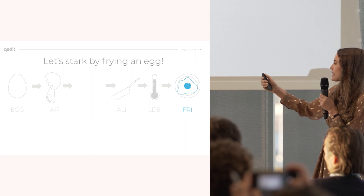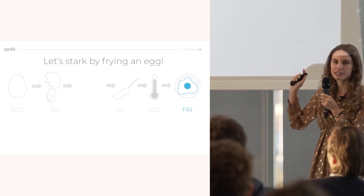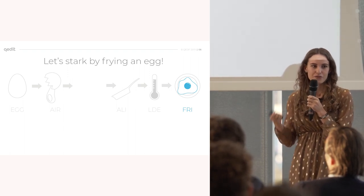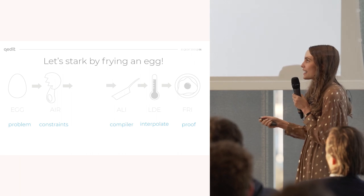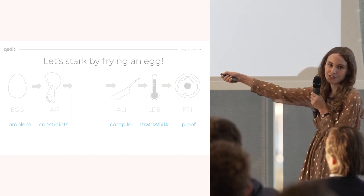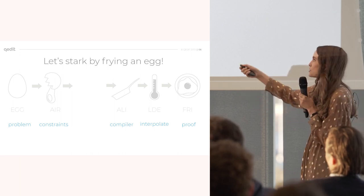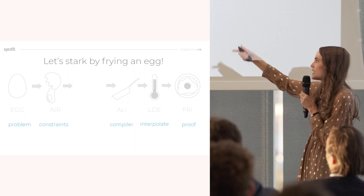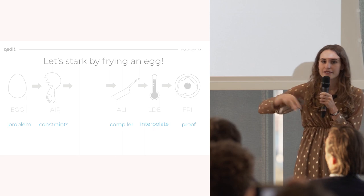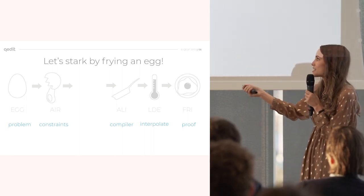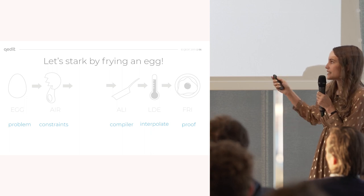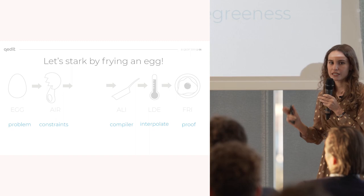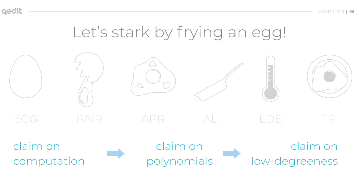Why did I leave this white space? That's for optimizations — like if your egg has two yolks, or if you open the egg and find crunchy things and have to prove it's fine. These are optimizations not considered in the library we used. Essentially: you start with a claim on a certain computation, you convert that claim to a claim about polynomials, and then you finish on a claim about the low-degreeness of those polynomials.